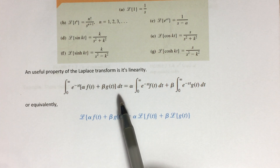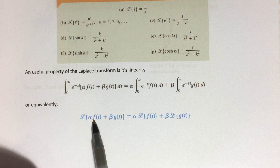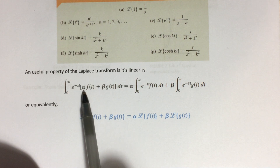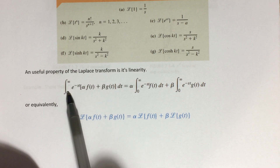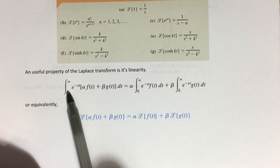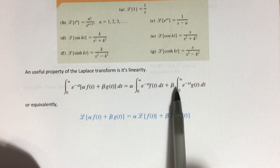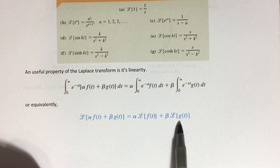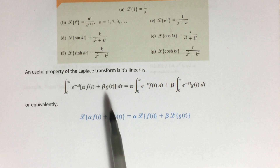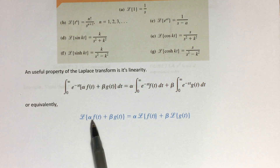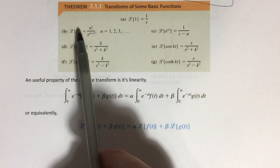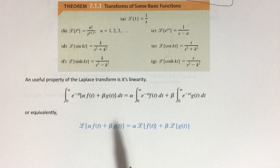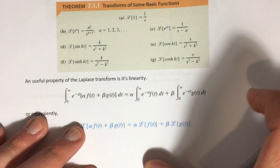Often the functions we want to transform are linear combinations of simpler types. In those cases we use the linearity property of Laplace transforms, which follows from the linearity of the integral. Specifically, L{α·f(t) + β·g(t)} equals α·L{f(t)} + β·L{g(t)}, obtained by distributing the exponential, splitting the integral, and pulling out constants.